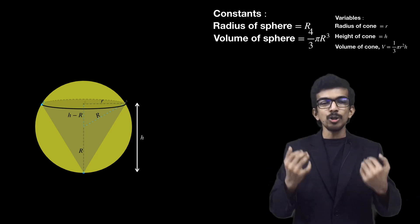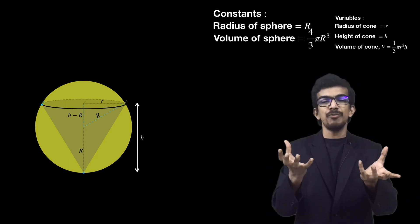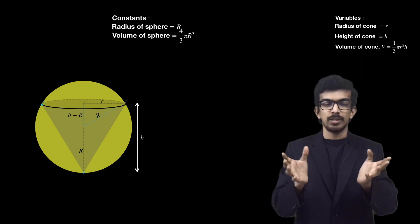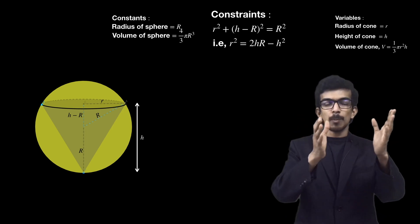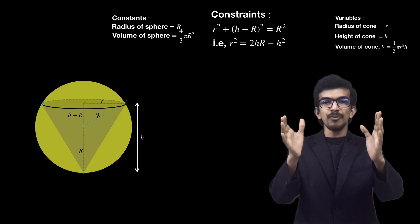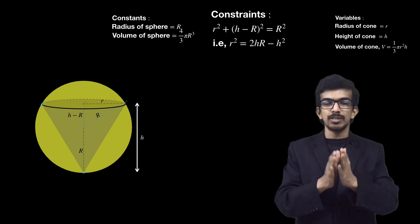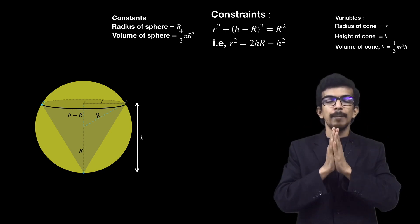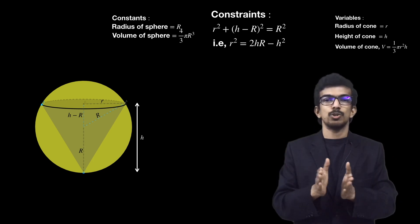Now before looking at the objective function (the quantity that needs to be maximized or minimized), we have to look at the constraints. The constraint can be obtained from the figure. If you look at the figure, we have a right-angled triangle with sides (h-R), r, and R. If you apply Pythagoras theorem, we have r² = 2hR - h².